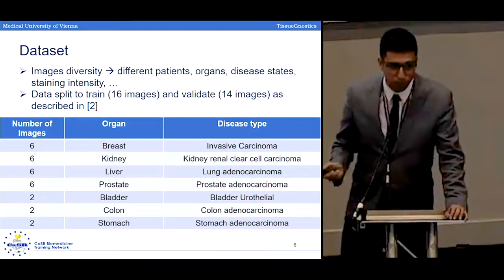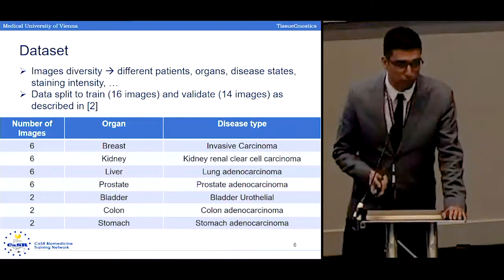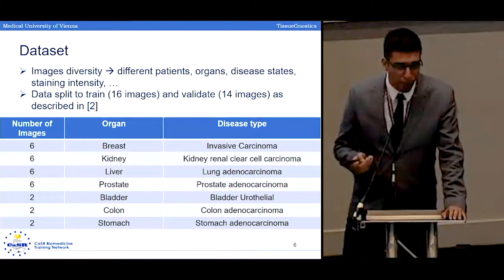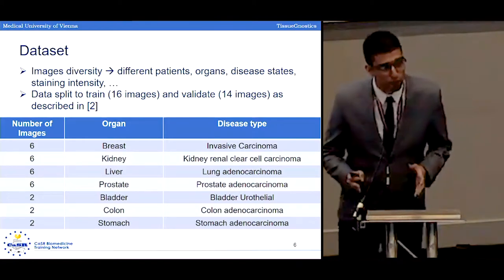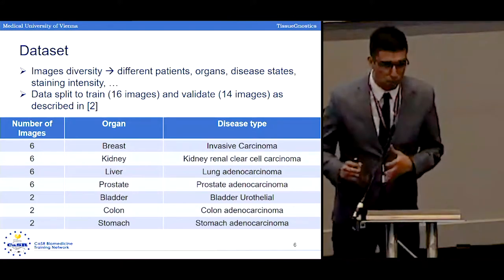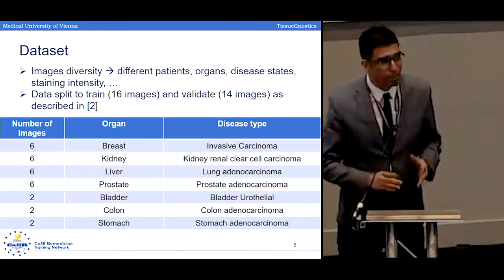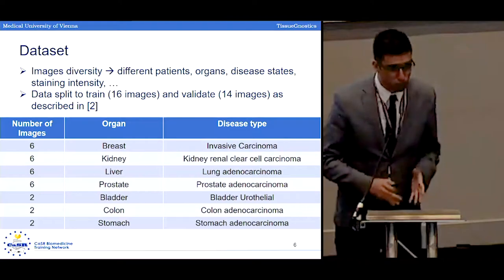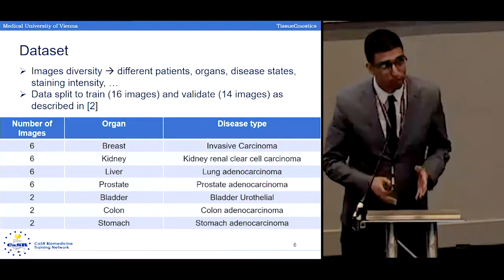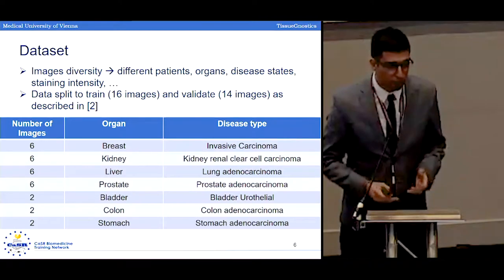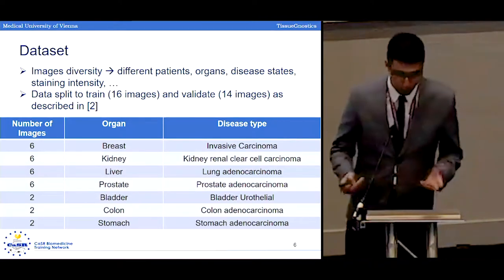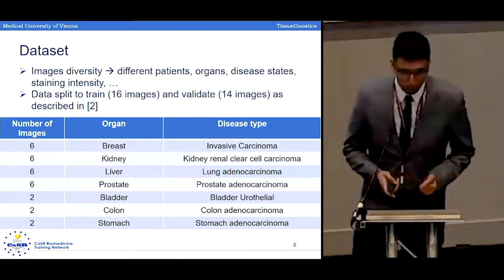As you can see, from these 30 images we had six images for the breast tissue, six images for kidney, and so on. We divided these 30 images into 16 images for training the algorithm and 14 images for validation, exactly in the same way that was introduced in the Kumar paper. By dividing the dataset in this manner, we could compare our results with the reference paper and with other algorithms.